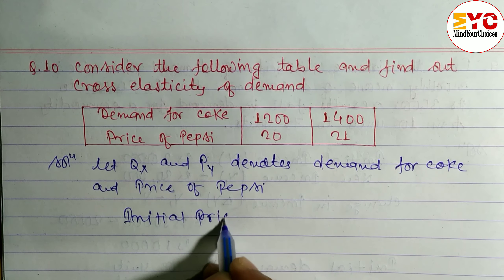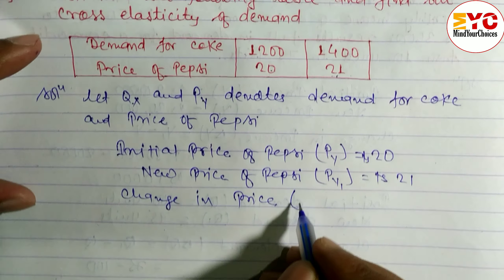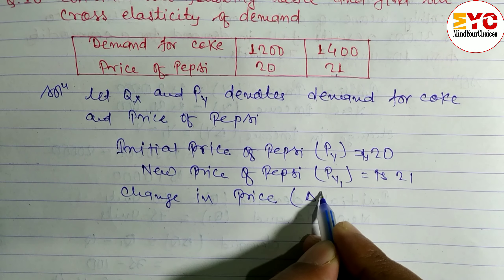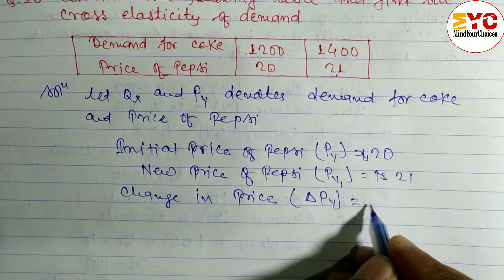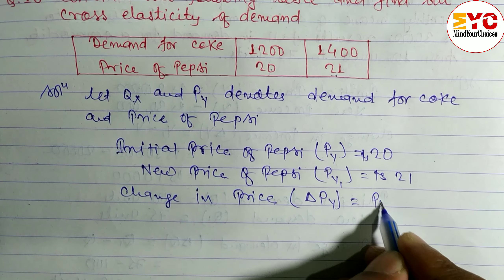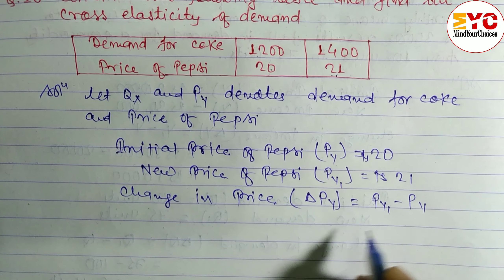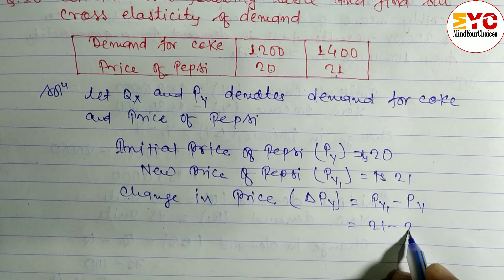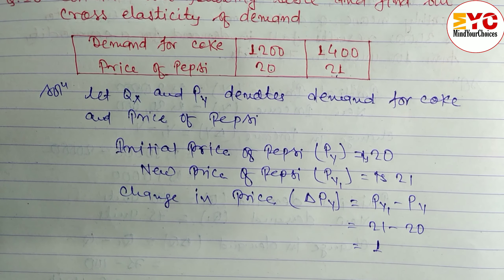Now we find the change in price. ΔPy is equal to Py1 minus Py, so 21 minus 20 is equal to 1.